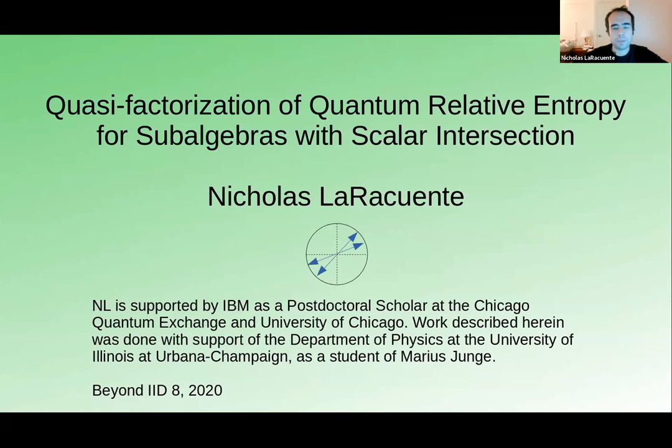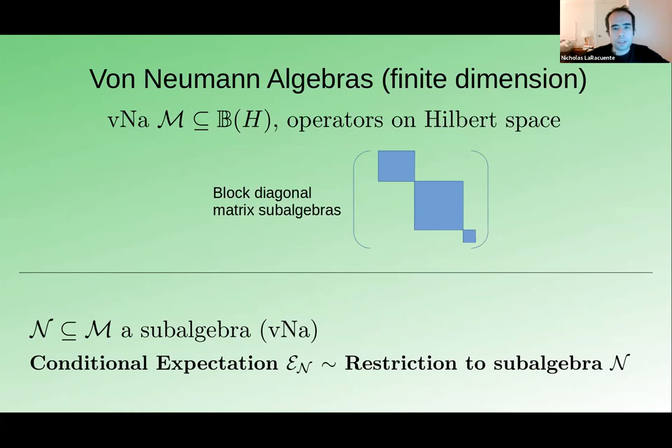I'm going to talk about a type of entropy inequality that goes by the name of quasi-factorization. This is an extension of a strong subadditivity-like inequality, first from subsystems to subalgebras, and then to subalgebras that may not have commuting restrictions. So this is a generalizing extension, but also a weaker inequality.